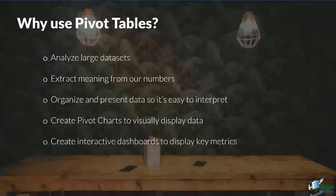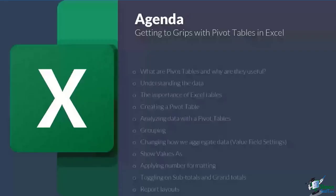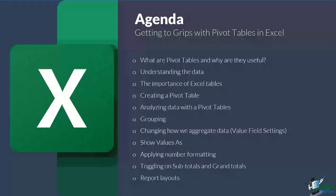Let's go through the agenda for today. We've discussed what pivot tables are and why they're useful. Next, we'll open the data set so you understand what you're looking at before we analyze it — people often miss that step. We'll go through each of the columns, then talk about the importance of Excel tables, which are different to pivot tables. Excel tables are more static, whereas a pivot table is something we can move around and analyze in different ways. I always use Excel tables before creating a pivot table.